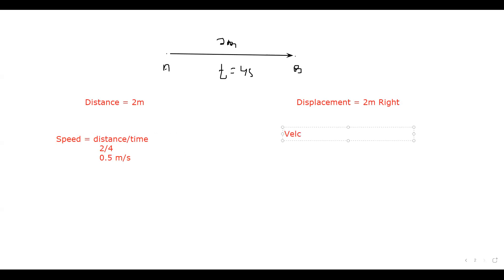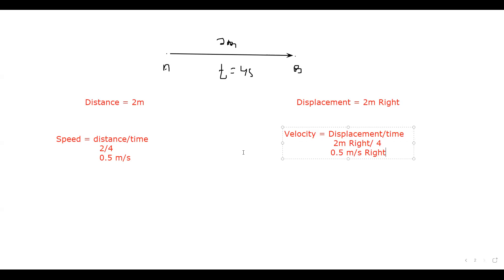What about velocity? That is displacement over time. The displacement is 2 meters towards the right, divided by time of 4 seconds, so 2 divided by 4 equals 0.5 meter per second towards the right. You can clearly see that when an object moves in a straight line, the magnitude of distance and displacement is the same, and the magnitude of speed and velocity is also the same. The only addition for velocity and displacement is that they are vector quantities, so they have a direction, whereas speed and distance are scalar quantities and have no direction.